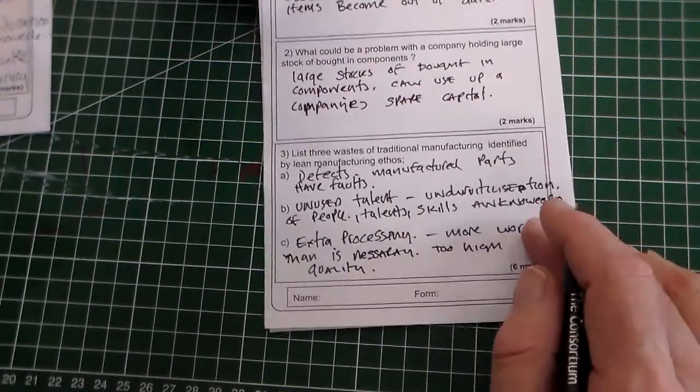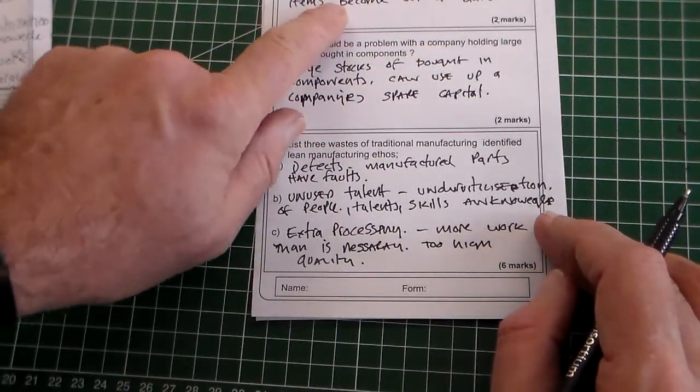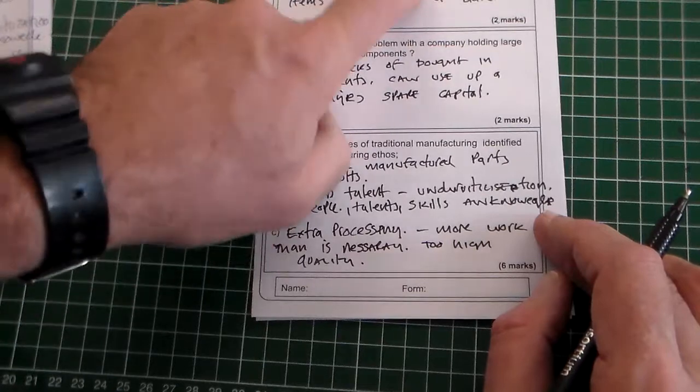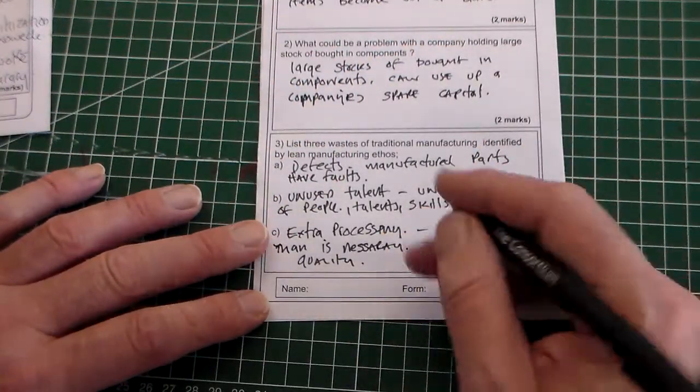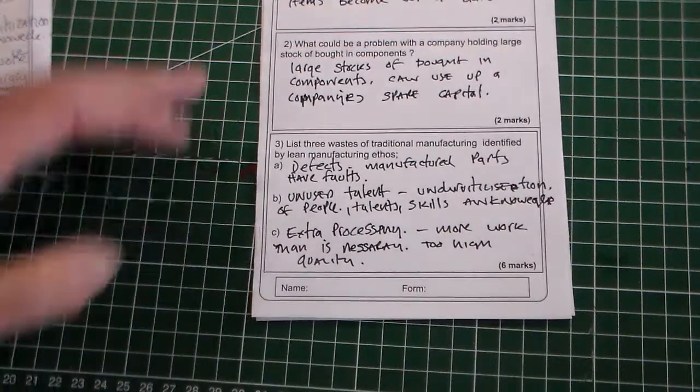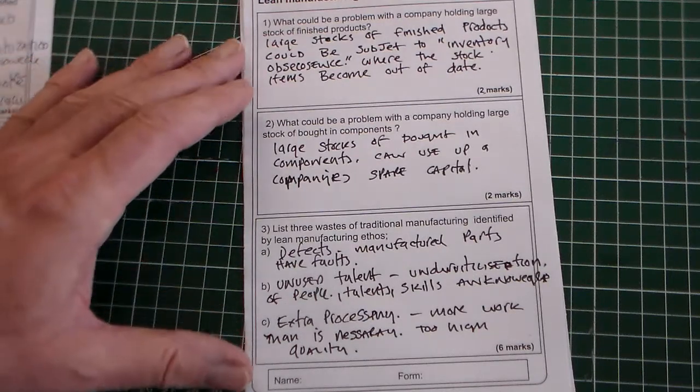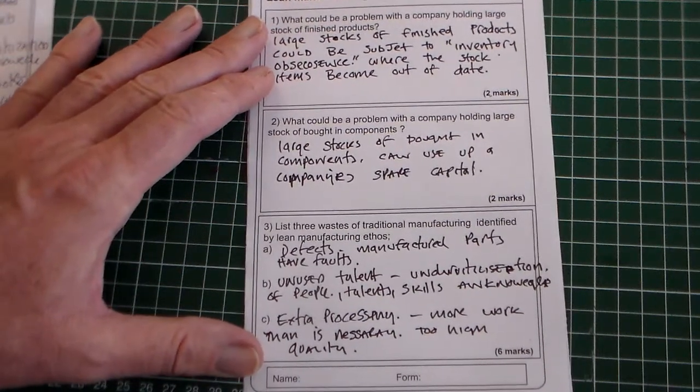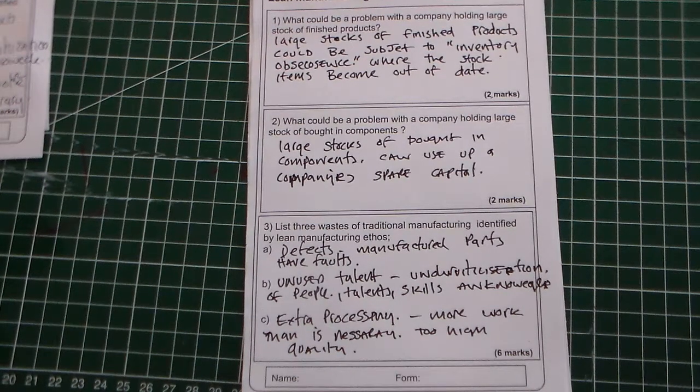So there we go, we've simply got there. So we've got two marks there, two marks there, and we put the inventory obsolescence in, so that would get a mark. We've added punctuation. So there it is, there's our completed lean manufacturing and just-in-time review.